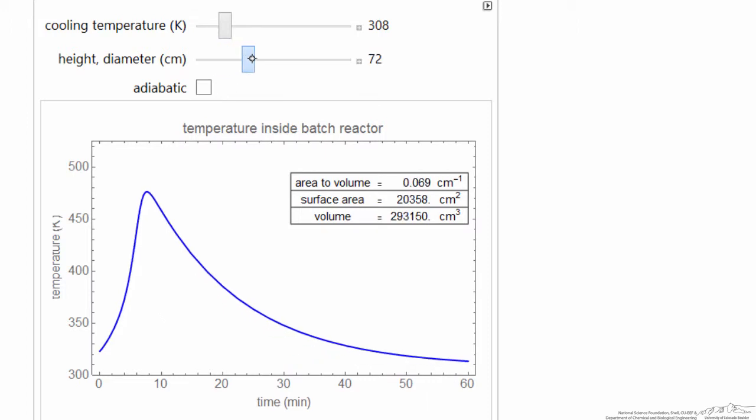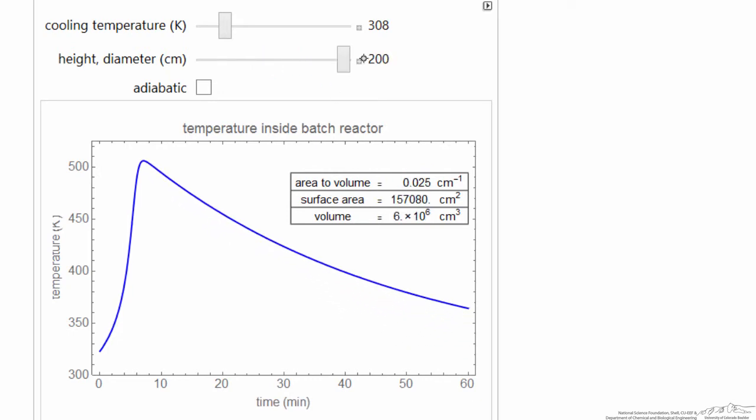As I continue to increase the size, the exotherm gets larger and larger, the surface area to volume goes down, and so we're close to the adiabatic temperature before reaction slows down because we've reacted most of the material.